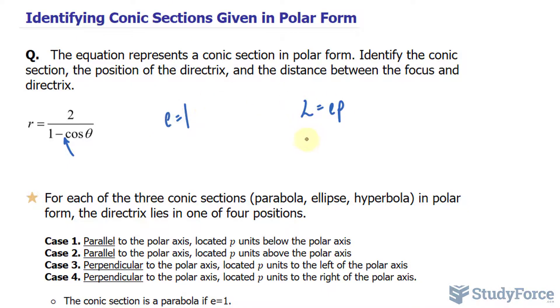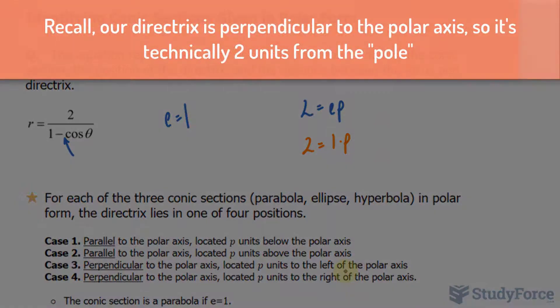Replacing e with one, we have two is equal to one times p, therefore p is equal to two. This means that our directrix is two units to the left of the polar axis.